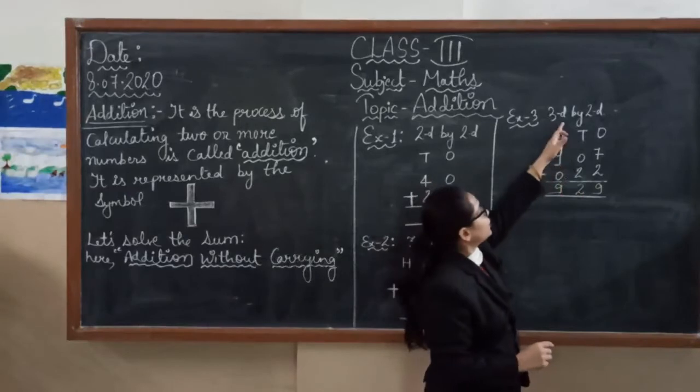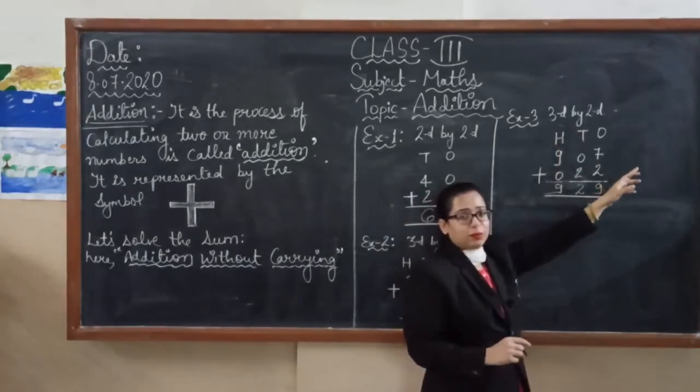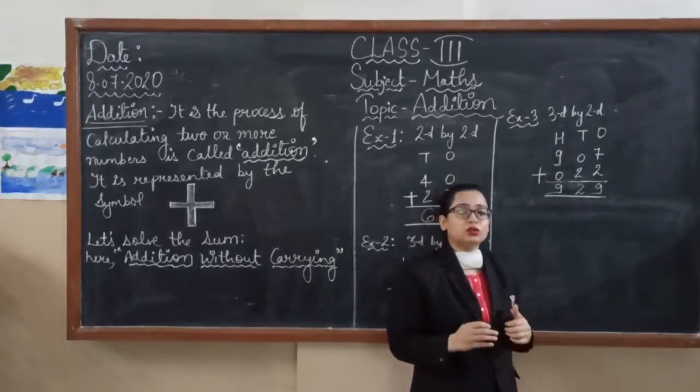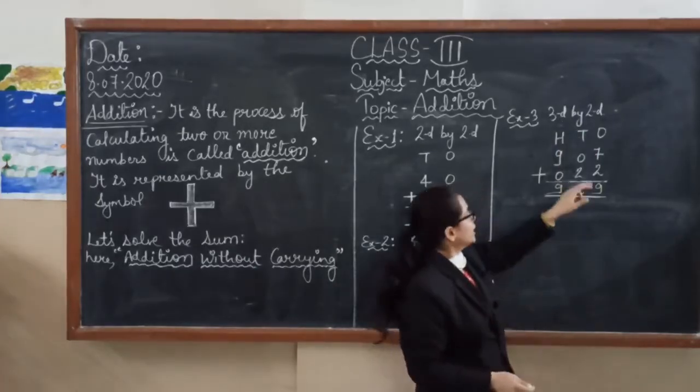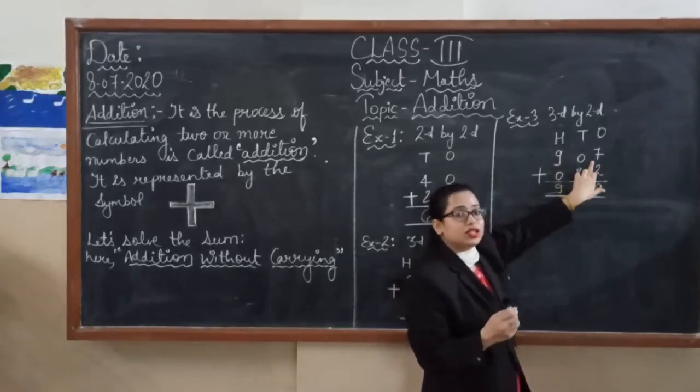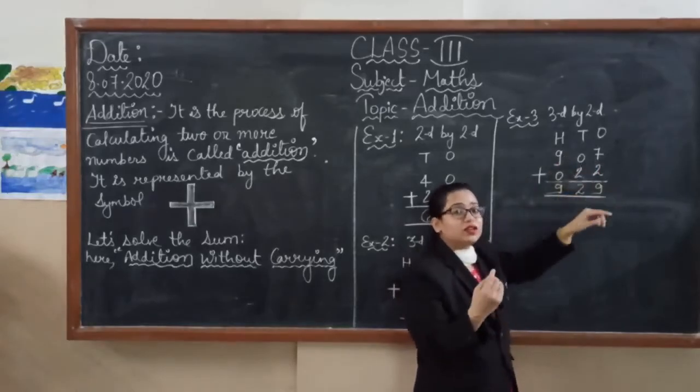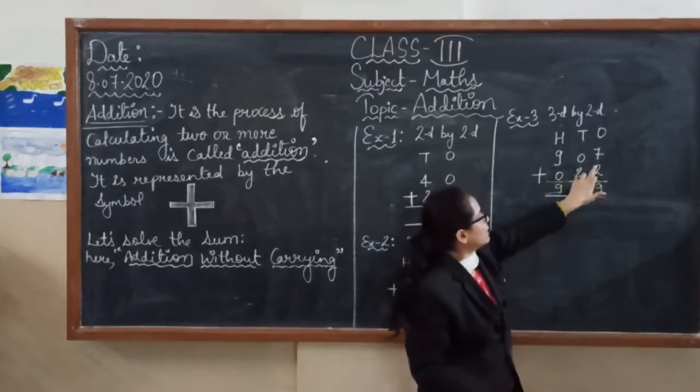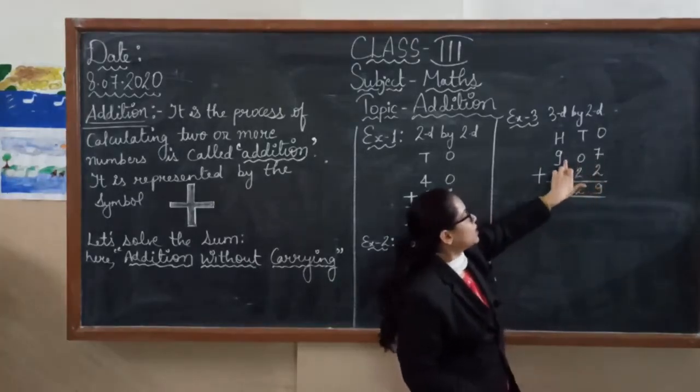Look at here. This is example three, three digit by two digit. But here we don't have the same place values. So we will have to balance the numbers. This is nine hundred and seven. We will start from the one's place. Then we will start writing. Always we will start from the one's place. Seven, zero, nine. And twenty-two.